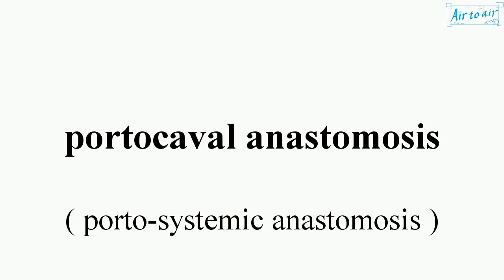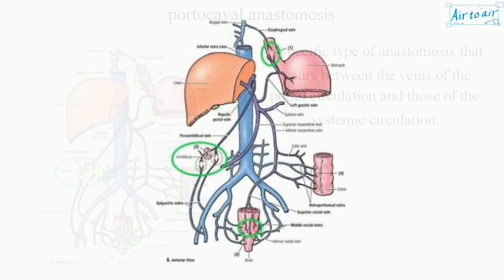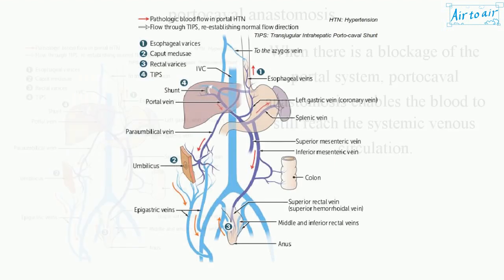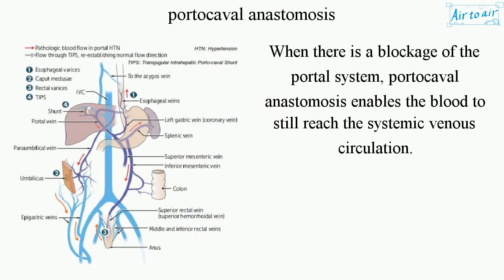Portocaval anastomosis — a specific type of anastomosis that occurs between the veins of the portal circulation and those of the systemic circulation. When there is a blockage of the portal system, portocaval anastomosis enables the blood to still reach the systemic venous circulation.